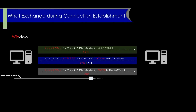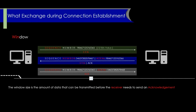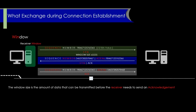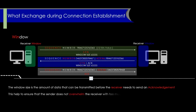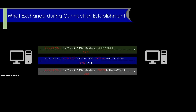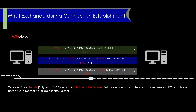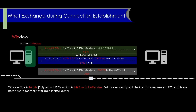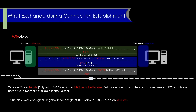Window size is the amount of data that can be transmitted before the receiver needs to send an acknowledgement. During connection establishment, each endpoint advertises its initial window size to the other, ensuring the sender does not overwhelm the receiver with too much data too quickly. This is how TCP performs flow control. The window size field is 16 bits, which allows up to 64 KB. Back in 1980, RFC 793's initial TCP design allocated 16 bits for the window, which was sufficient for slow networks.